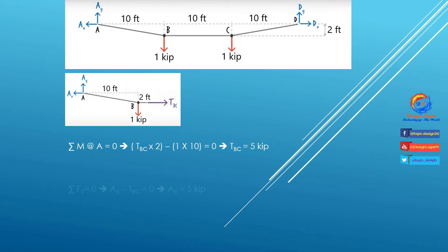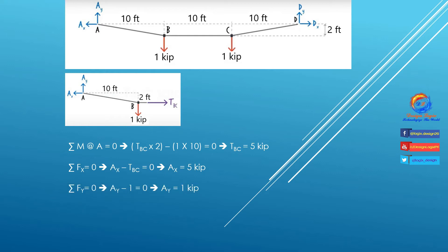Summation of forces in the X direction equals 0: AX minus TBC equals 0. Substituting TBC equals 5 kips, we get AX equals 5 kips. Summation of forces in the Y direction equals 0: AY minus 1 equals 0. Solving this, AY equals 1 kip.